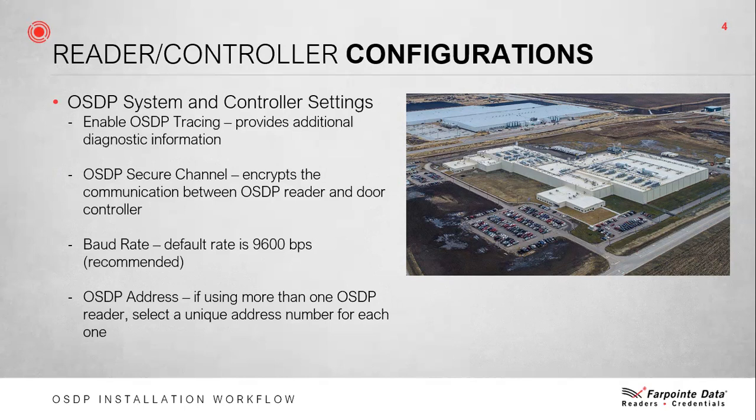OSDP secure channel is something that end users with very strict IT compliance will find very interesting, and it's information you should arm your sales team with when upgrading customers or presenting new offerings. Baud rate: the default rate is 9,600 baud and this is recommended, but the baud rate for communication between multiple readers on an RS-485 drop can be regulated. Finally, OSDP addressing: if you are utilizing multi-drop topology with more than one device per port, a unique address must be assigned to each device. This address is assigned by the controller and facilitated by the reader.